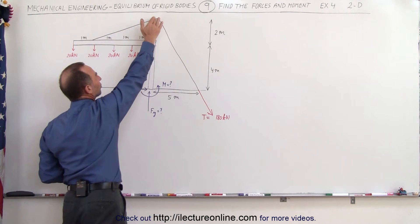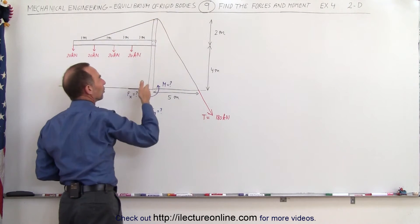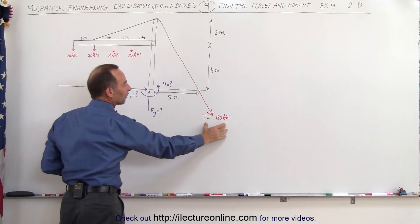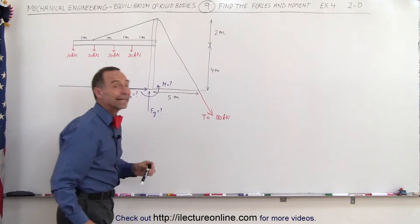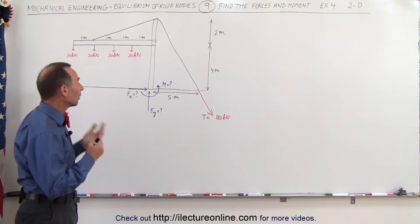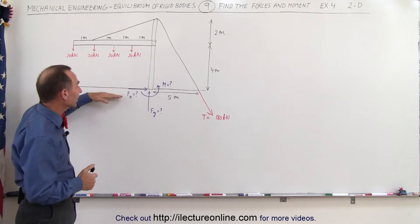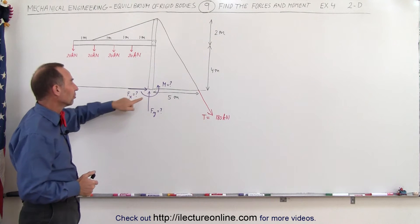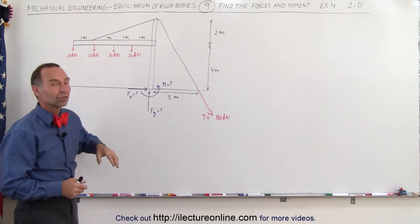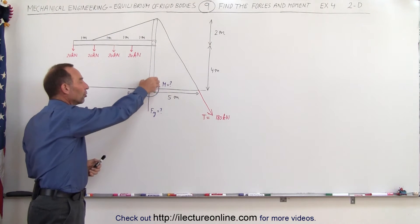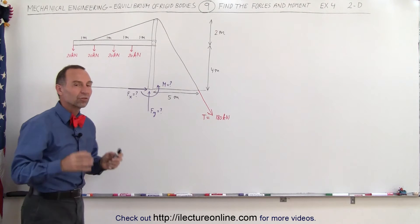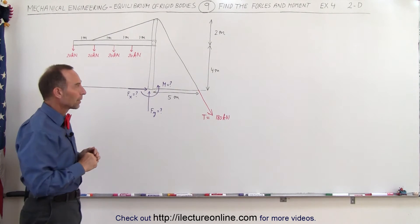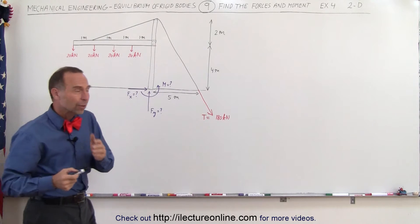We have a cable being supported by the vertical post, which is hooked to the ground. The cable has a tension of 180 kilonewtons. We're asked to calculate the force at the bottom of the post in the x direction, the force in the y direction, and the moment about the post, assuming the post is fixed to the ground.